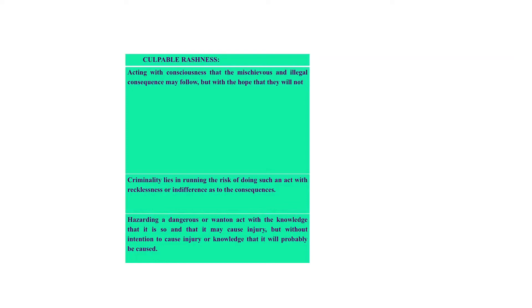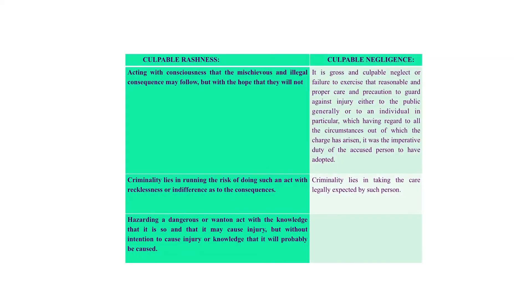Culpable rashness also includes hazarding a dangerous or wanton act with the knowledge that it is so and that it may cause injury, but without intention to cause injury or knowledge that it would probably do so. Culpable negligence, on the other hand, refers to gross and culpable neglect on the part of the accused, or failure to exercise that reasonable and proper care and caution that any other reasonable man would have exercised in order to guard against injury — either to the public in general or to an individual victim in particular. So, over here we see that there is failure to exercise due care and caution, or breach of the duty imposed upon a person by the law. The criminality in this case lies in not taking the care or duty that the law expects one to take. Thank you.